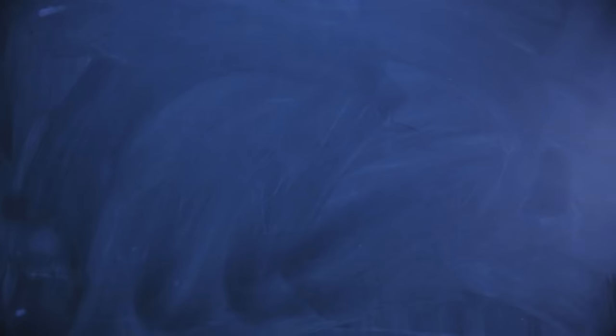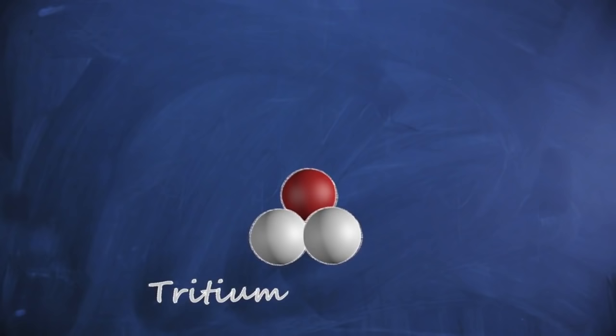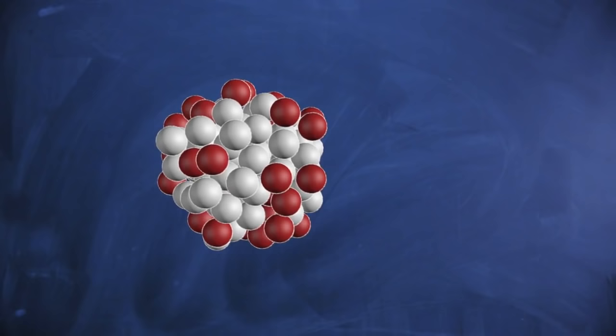There are three types of beta decay. Standard beta decay involves the nucleus decaying by emitting an electron and a neutrino. The second is double beta decay, where two electrons and two neutrinos are emitted simultaneously.